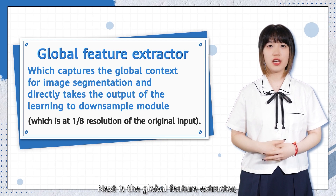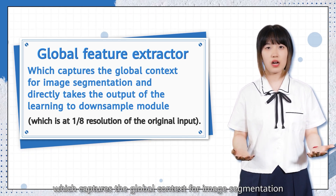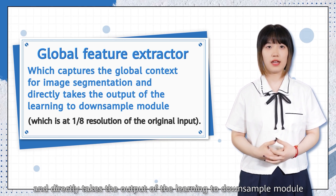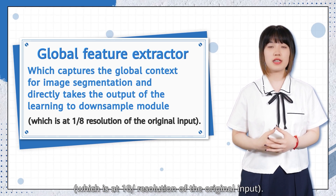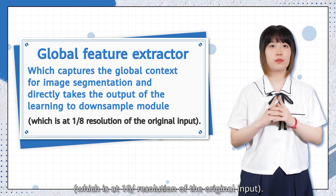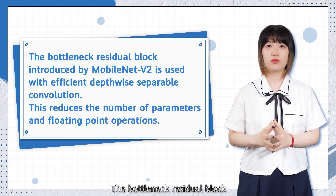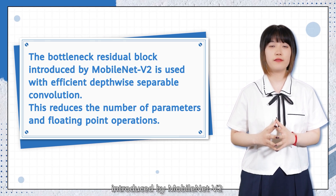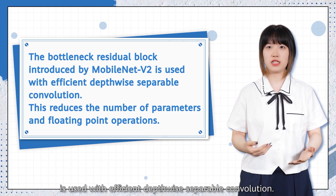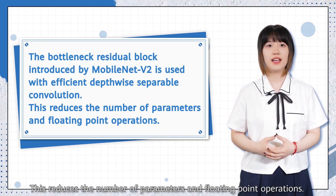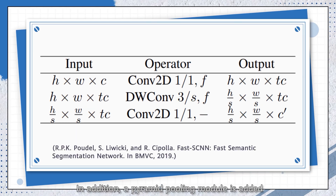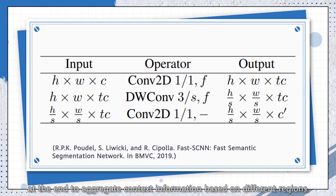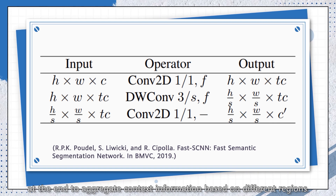Next is the global feature extractor, which captures the global context for image segmentation and directly takes the output of the learning-to-downsample module, which is at one-eighth resolution of the original input. The bottleneck residual block introduced by MobileNet V2 is used with efficient depth-wise separable convolution, reducing the number of parameters and floating-point operations. In addition, a pyramid pooling module is added to aggregate context information based on different regions.